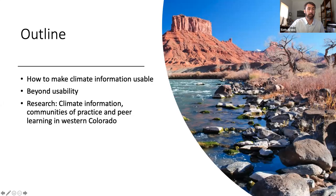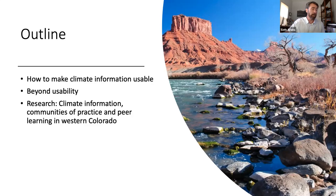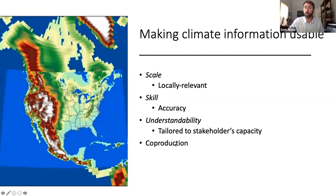I'm going to talk a little bit about how we go about making climate information more useful and then talk about what that next step is — meaning that as scientists and information providers, we can do the work to make the information usable, but there's really another step needed, and that has to do with actually working with potential users of that climate information. Finally, I'll talk about the research we've worked on trying to understand what kind of climate information water providers are using.